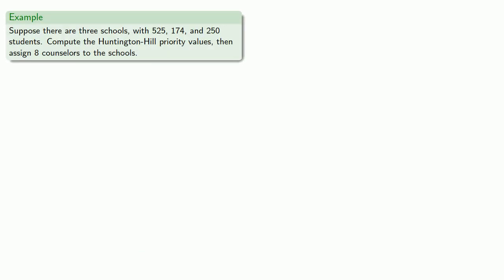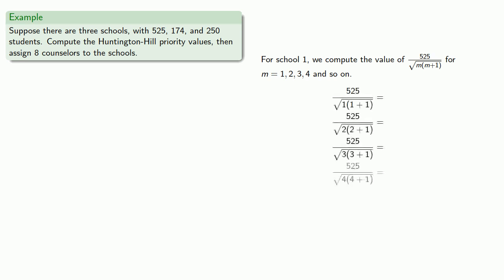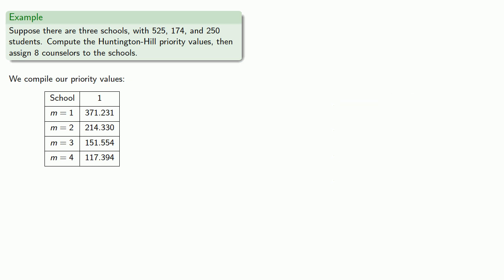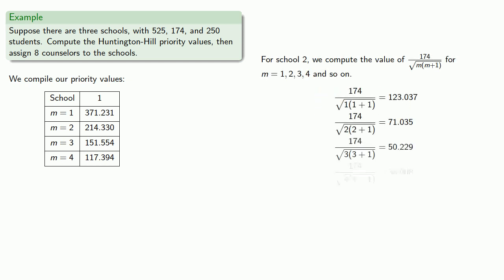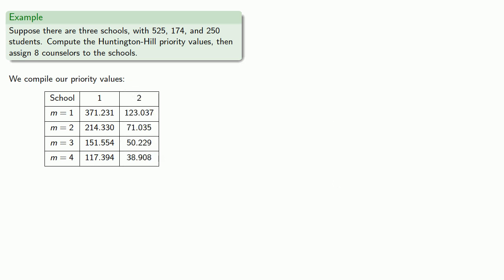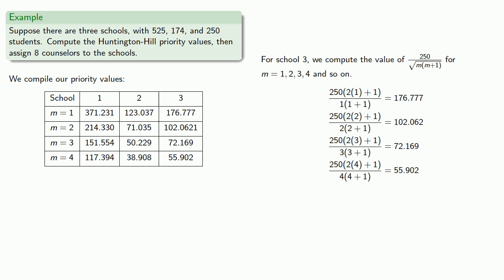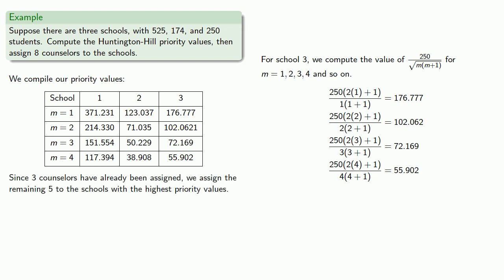So we'll compute our Huntington-Hill priority values. For school one, we compute population divided by the square root of M times (M+1), for M equal 1, 2, 3, 4, and so on. We do the same thing for school two, and for school three. Since three counselors have already been assigned, we assign the remaining five to the schools with the highest priority values. Once again, school one gets three more counselors, and schools two and three get one more apiece.